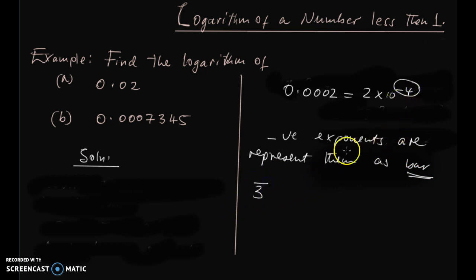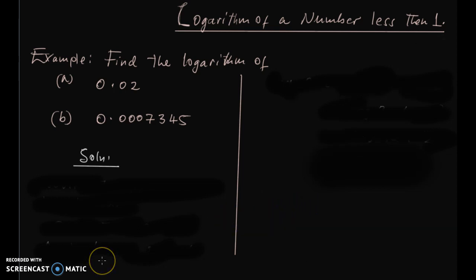A bar is a number with a line on top, so bar represents a negative exponent. That is very important to understand as we move on.